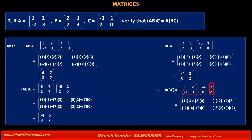Multiplying second row of A by second column of BC: -2×2 + 3×2. Solving, we get [-4, 6, 8, 2]. Thus, product of matrices (AB)C is equal to A(BC). Hence verified.